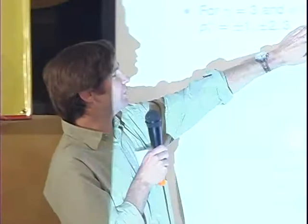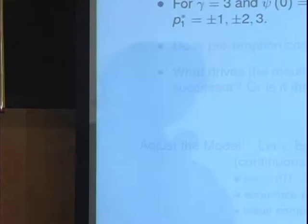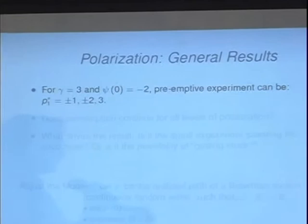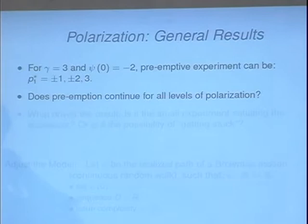The main point is that the value of alternating power persists as they become more polarized. And the second point is that we're getting a richer set of behavior. As we become more and more polarized, we get a richer and richer set of preemptive behavior. So if we move them to three and negative three and let the known point be negative three, the set of possible preemptive experiments are plus one, minus one, plus two, minus two, or even three. As they become more polarized, the preemptive experiment needs to get bigger and bigger in some cases.